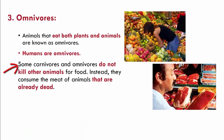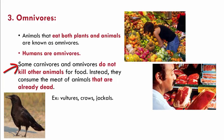Some carnivores and omnivores do not kill other animals for food. Instead, they consume the meat of animals that are already dead. For example, vultures, crows, jackals, etc.